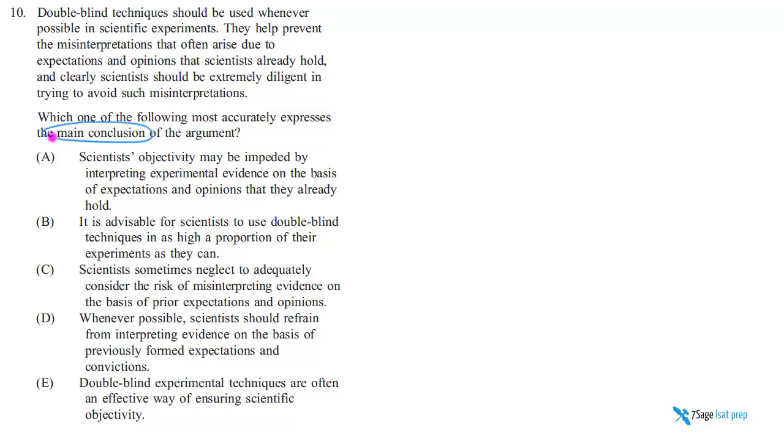With this question, we have another main point, main conclusion question. The question stem asks us to accurately express the main conclusion of the argument. So this is the most basic type of logical reasoning question. This is the type of question that we, in our full course, teach you how to deal with first because it has to do with the most basic fundamental skill, which is being able to identify the different parts of an argument.